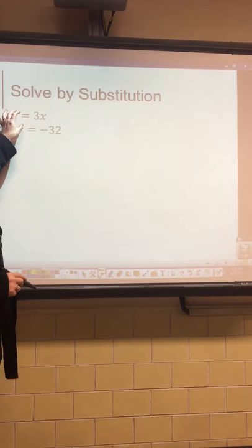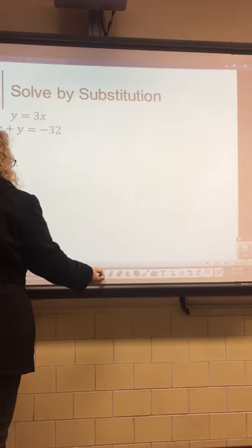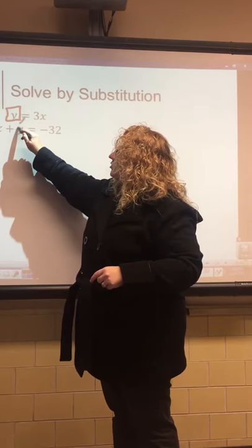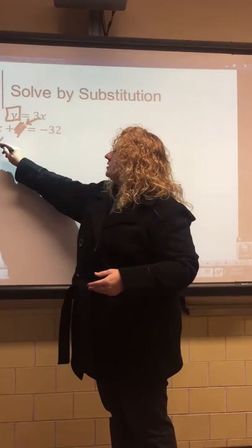Let's start with example number one. Our goal is to figure out what x value and what y value will make both equations true. You're going to first look for an equation that has an isolated variable. The first equation says y equals 3x, so since y is isolated, we're going to box that in. Put a box around the y. Now go to the second equation and cross off the y.